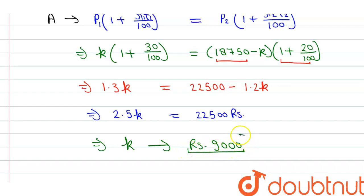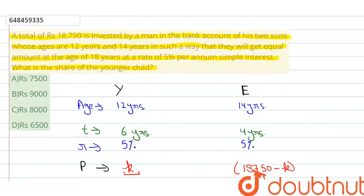Rs. 9,000 will be our correct answer. Now let's match with our options. So option number B, Rs. 9,000 will be the right answer.